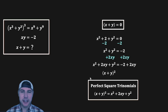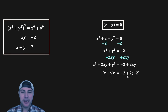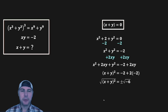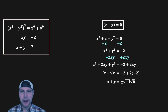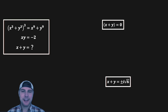The left-hand side becomes (x + y)². On the right-hand side, substituting xy = -2, we get -2 + 2(-2) = -2 - 4 = -6. So (x + y)² = -6. Taking the square root of both sides, the square root of -6 becomes i√6. Therefore x + y = ±i√6, which are the complex solutions.